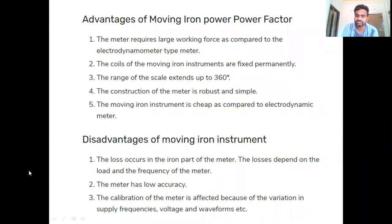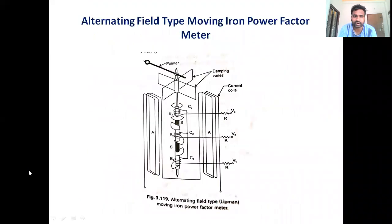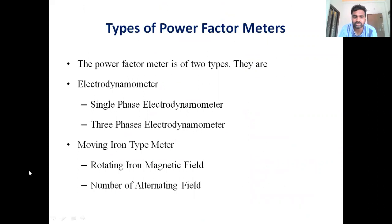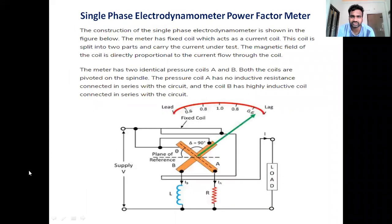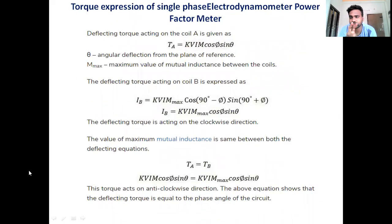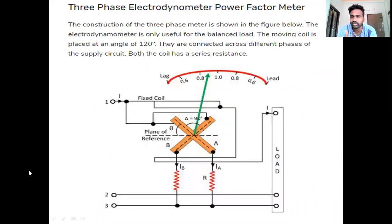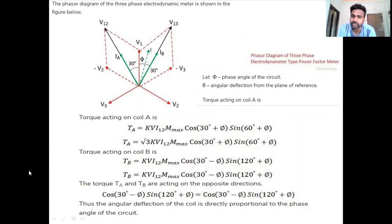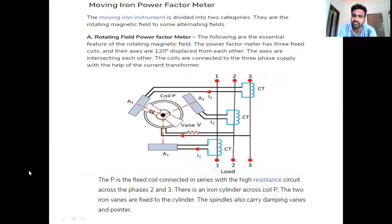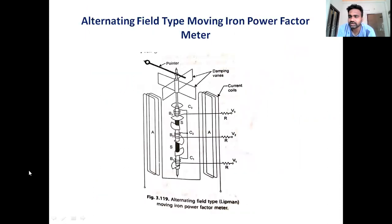In today's class, we discussed moving iron type power factor meter and alternating field type power factor meter. Up to now, we have analyzed the purpose of power factor meters, various classifications — single-phase and three-phase electrodynamometer type power factor meters — the torque expression, the phasor diagram analysis of three-phase electrodynamometer type, rotating field type, and alternating field type moving iron power factor meter.